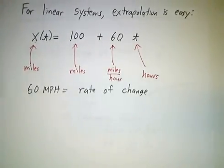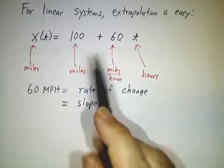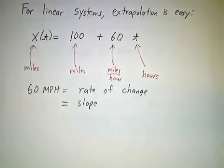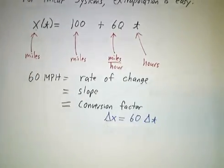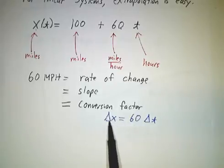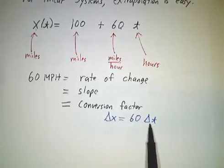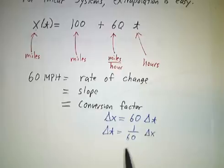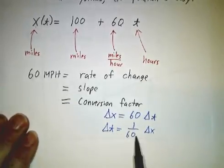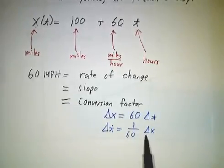So, 60 miles per hour was our rate of change. And we saw that that's also the slope of the line that you get if you graph this function, and it's a conversion factor. You can get the change in position as a function of the change in time, or you can get how long it'll take as a function of how far you're going. So far, so good.